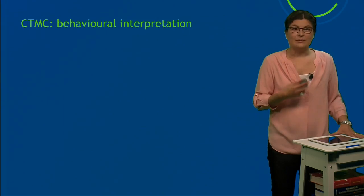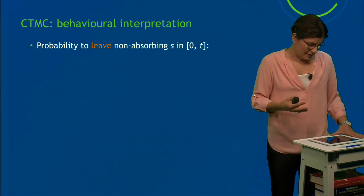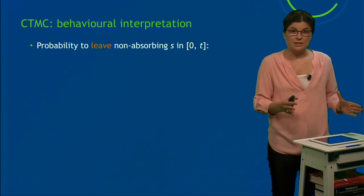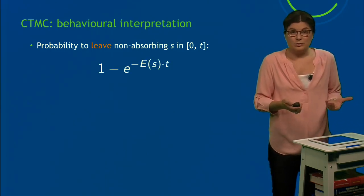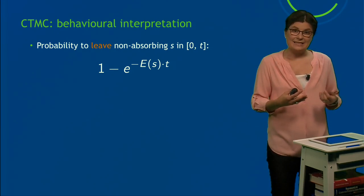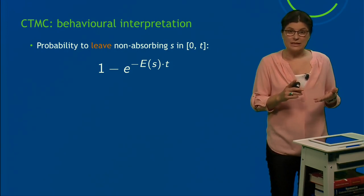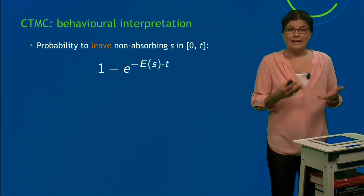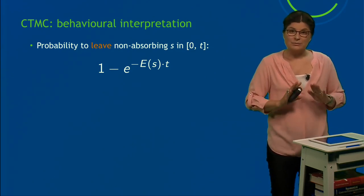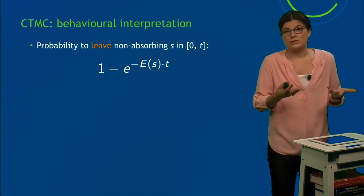First, let's take a look at the behavior of the CTMC. The probability to leave a non-absorbing state s in the time interval [0, t] is given by the exponential probability distribution, which you've seen in the last lecture: 1 - e^(-E(s)·t). Recall that capital E(s) is the exit rate. It gives you the sum of all the rates that bring you out of state s. So this is the probability to leave a non-absorbing state.